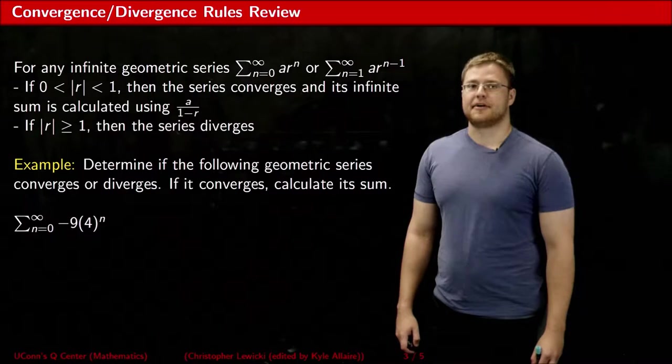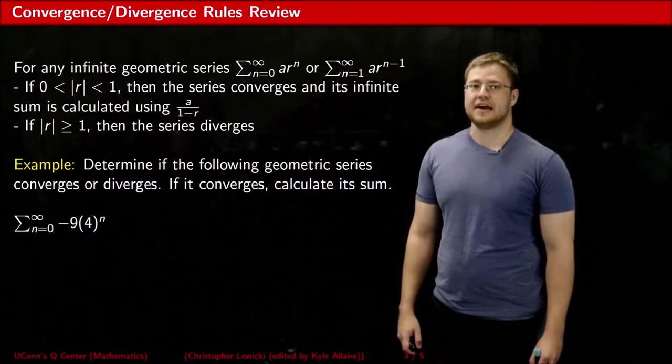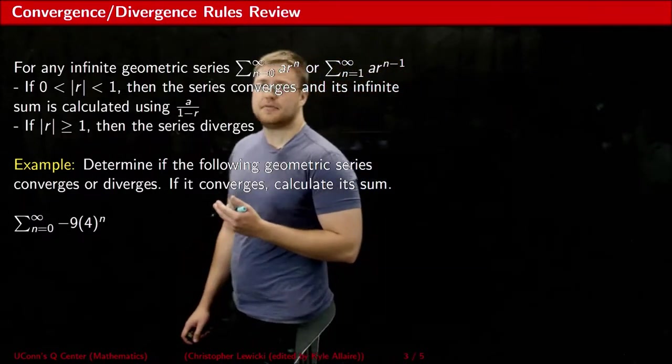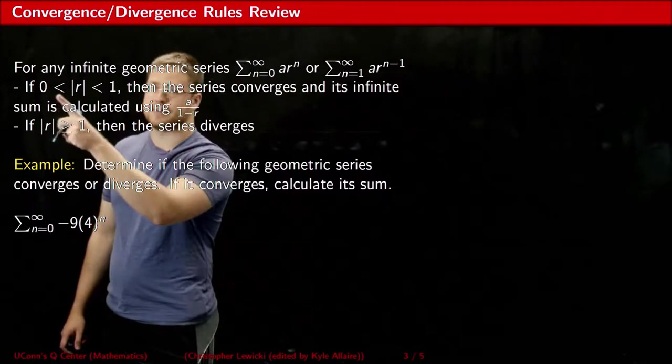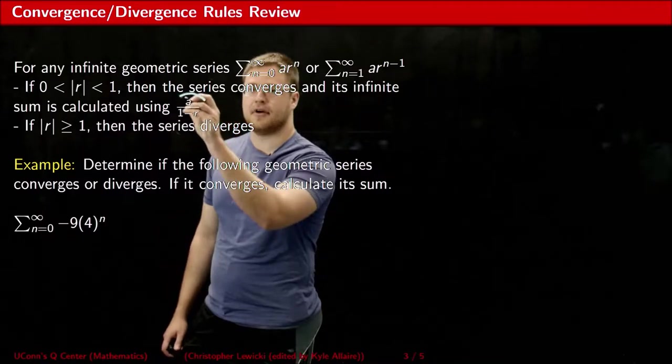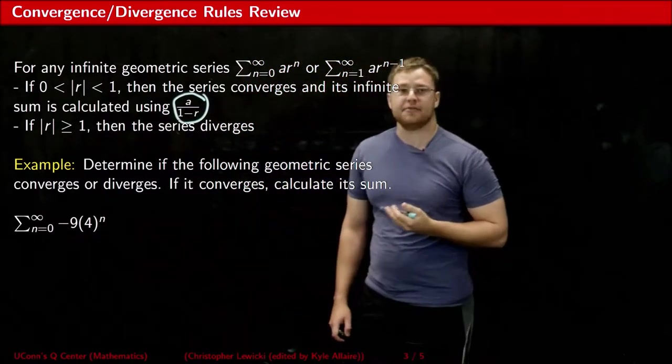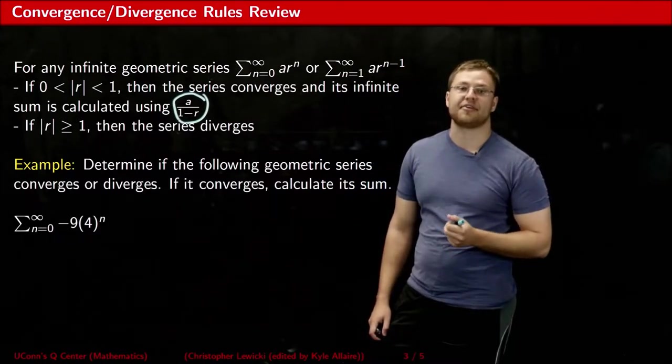As I explained in detail in part three, you could tell if an infinite geometric series converges or diverges by looking at its r value. If the value of r, the common ratio, has an absolute value between 0 and 1, then the series converges and you could calculate its infinite sum using this simple formula. If the absolute value of your r value is greater than or equal to 1, then the series diverges.